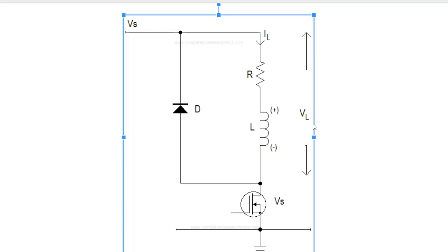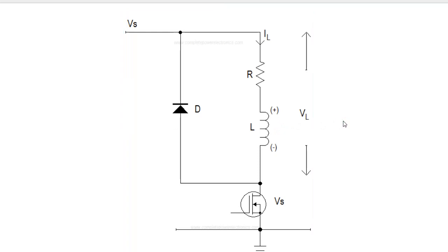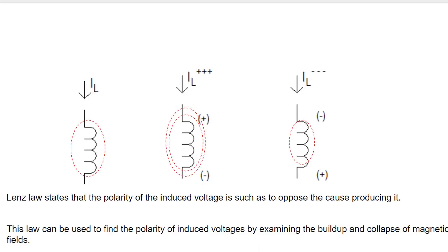Before that I will just refresh about how the inductor works — how the magnetic field will get induced surrounding the inductor, and what will happen when you are suddenly decreasing or increasing the current in the inductor. Then only we can understand not only the freewheeling diode concept, but also all other inductive nature loads in electronic circuits. When constant current is passing through the inductor, a magnetic field will be produced surrounding the coil. When steady DC current is flowing, the field will be constant around the inductor, and there is no induced voltage around the coil.